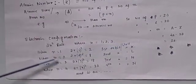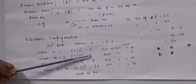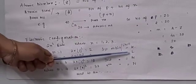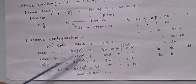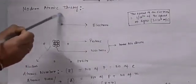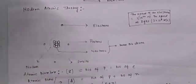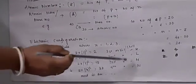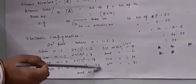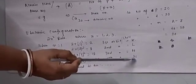By putting n equals 2, we get 8. So the number of electrons in the second shell, which is L, will always be 8. When n equals 3, we get 18, which is for the M shell — maximum electrons for M shell will be 18. For the fourth shell, where n equals 4, the number of electrons will be 32. So for the N shell, the total number of electrons will be 32.